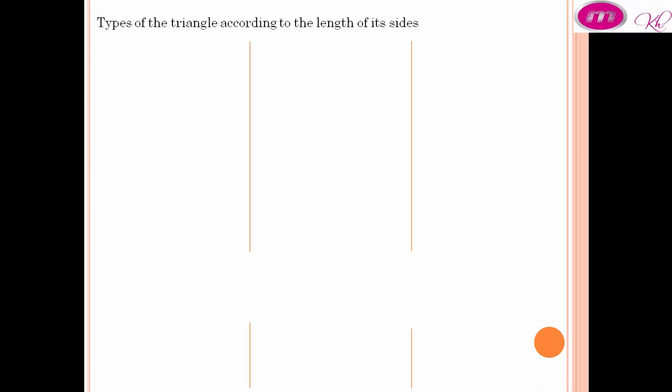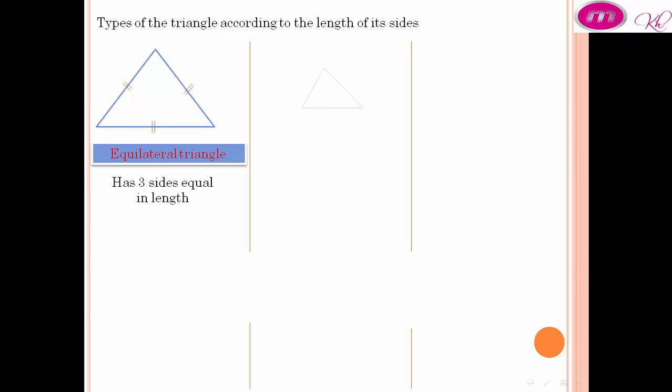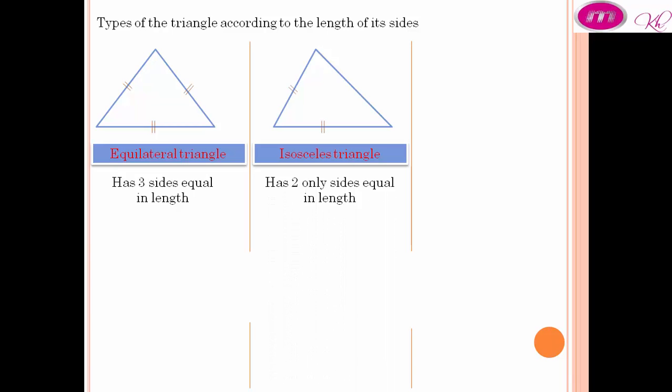Types of triangles according to the length of each side. The equilateral triangle has 3 sides equal in length.